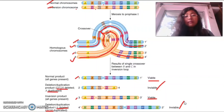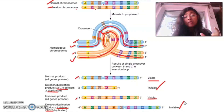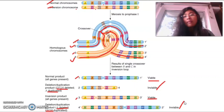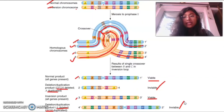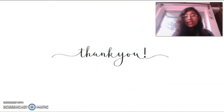So the key difference: in paracentric inversion after crossing over, a dicentric bridge and an eccentric (acentric) chromosome are formed among the recombinants. In pericentric inversion, the two recombinants are monocentric but non-viable because they contain deleted and duplicated products. I hope this chapter is now clear. If you have any doubts, leave a comment below and I will answer. Thanks for watching and happy learning.